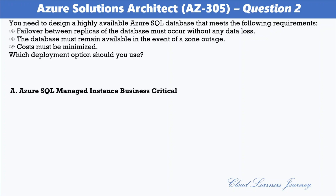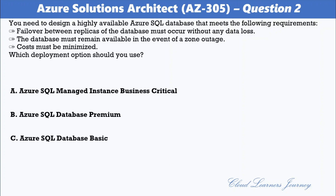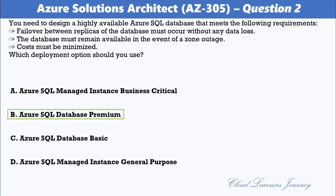The options are: A) Azure SQL Managed Instance Business Critical; B) Azure SQL Database Premium; C) Azure SQL Database Basic; D) Azure SQL Managed Instance General Purpose. The correct option is B — Azure SQL Database Premium. The premium service tier is designed for OLTP applications with high transaction rates and low latency I/O requirements. It offers the highest resilience to failures by using several isolated replicas.